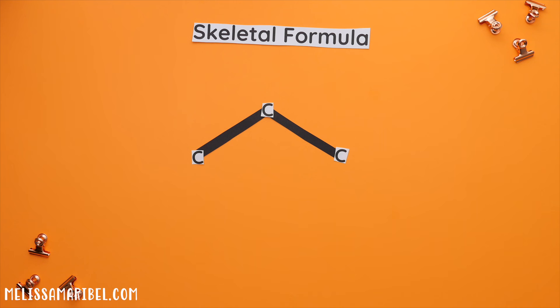This is where knowing that carbon wants four bonds is going to be very important. This is what the structure would look like if we drew in the hydrogens. At this carbon, we already have one bond, so we are missing three more bonds, which must be three hydrogens.